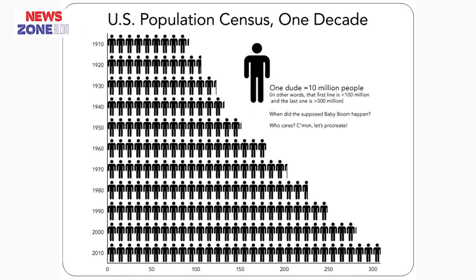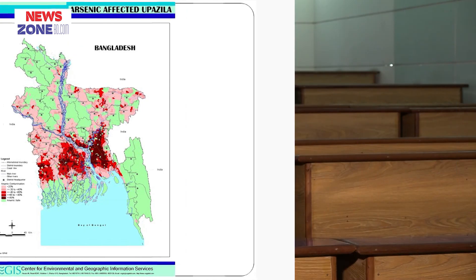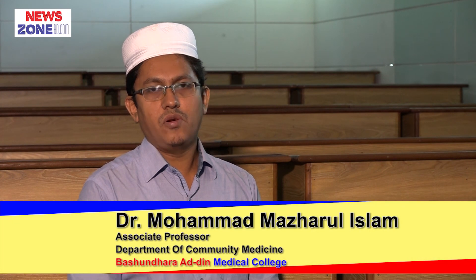Here is another example of a pictograph of US population census over one decade. And this is a map diagram. It shows a map of Bangladesh containing different colors in different parts. The color intensity must correspond to the frequency intensity — the darker the area, the more frequency there is. This is the rule to make a map diagram. And that is all for today. Thank you for watching. Assalamualaikum.